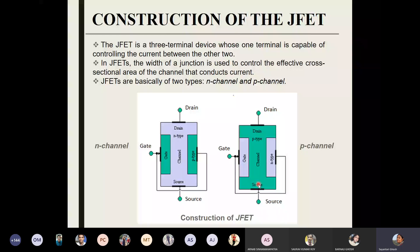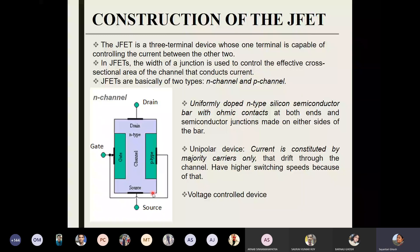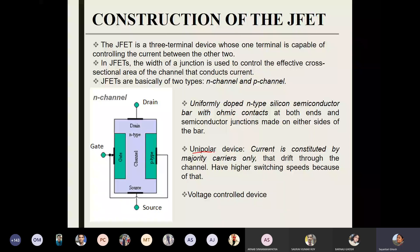Throughout our discussion we will mostly talk about n-channel FETs — and you can just reverse everything to get p-channel FETs, reversing the batteries and everything. The construction is quite simple and the working principle is also much simpler to understand than other transistors like BJT. JFET is a unipolar device because there is no contribution from minority carriers — the current is constituted only by the majority carriers. These are useful facts to know: why do we call n-channel FET a unipolar device? Because the current is constituted only through majority carriers.